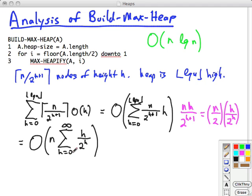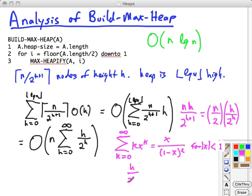That simplification lets us apply this other formula, which is A.8 from the textbook. Another rewrite is needed here to match this formula. We can rewrite h over 2 to the h equals h times 1 to the h over 2 to the h, which can be written as h times 1 half to the h. So this means that in this formula, x will be 1 half, and k will be h.